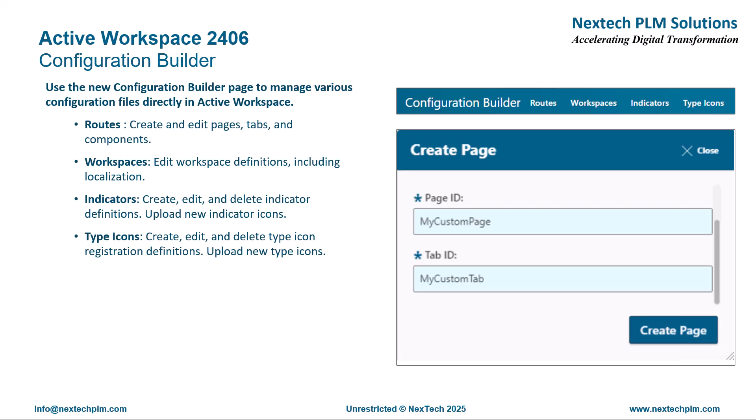Prior to Active Workspace 2406, developers were using command line tools to create various customization types like locations, sublocations, workspaces, visual indicators, or type icons. Now developers can use the Configuration Builder page to manage those configuration files. There have been schema changes to indicator and type icon registration definitions to make them consistent with each other, and the files for registering icons using conditions now have similar structure for both.